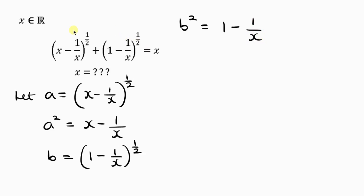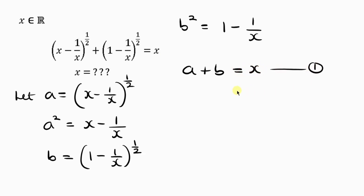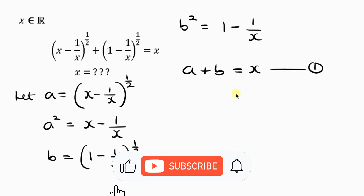So now let's go back to the original expression given in the question. Remember we said the first expression is a and the second expression is b. So I'm writing a plus b equal to x — I'll call this Equation 1, because I'm going to come back to it later. Our next step is to multiply both sides of the equation by a minus b.